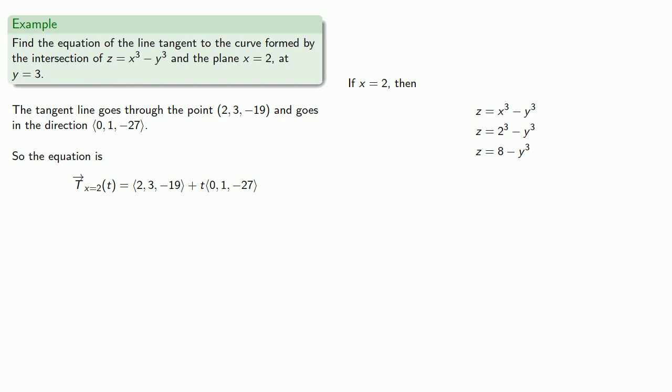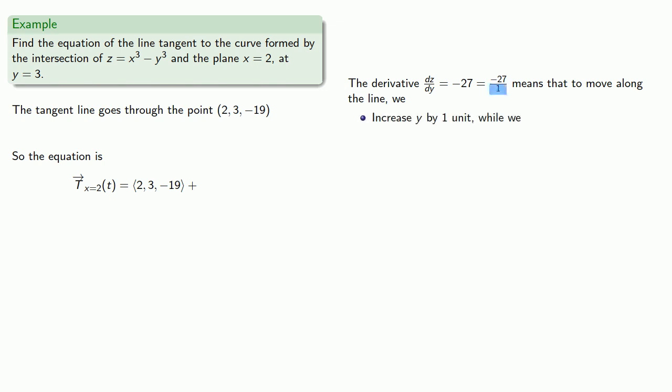And this is an equation in two variables, so there's a curve. And I could talk about the line tangent to this curve. And the derivative will be, now y is actually a variable. Y could take on many different values, but we only care about what happens when y equals three. And so we find our derivative. Now remember, we're actually working in three dimensions. The derivative dz dy equals negative 27, or negative 27 divided by 1. So remember that the derivative tells us how the variable z is changing as y changes. And negative 27 divided by 1 means that to move along the tangent line, we increase our y values by 1 unit, while we decrease our z values by 27 units.